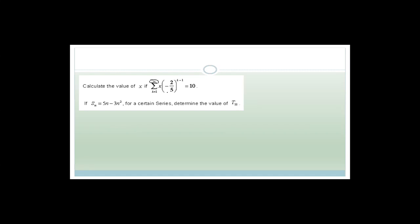The first thing to recognize is that we're looking at the sum to infinity. The only formula we have for that is sum to infinity = a / (1 − r), where we have a geometric sequence. So we know the sum to infinity has to equal 10. In order to solve for x, we need to find the first term and the common ratio.